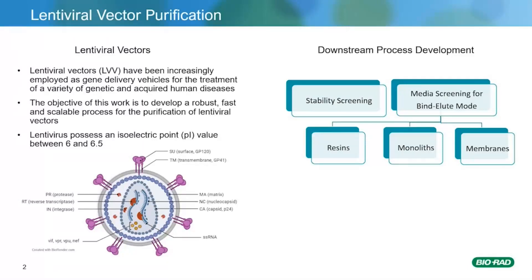I would like to give a brief overview on lentiviral vectors, also abbreviated as LVV. Lentiviral vectors have been increasingly employed as gene delivery vehicles for the treatment of a variety of genetic and acquired human diseases. However, lentiviral purification processes have often suffered from low yields, mainly due to poor stability of the vectors and low product titer in the feed material. The objective of this work is to develop a robust, fast, and scalable process for the purification of lentiviral vectors. We started by learning about the isoelectric point of the lentivirus, which was reported to be between 6 and 6.5. This meant that at a neutral pH environment, the lentivirus will carry a net negative charge and hence can be absorbed on a positively charged adsorbent such as the anion exchange resins.